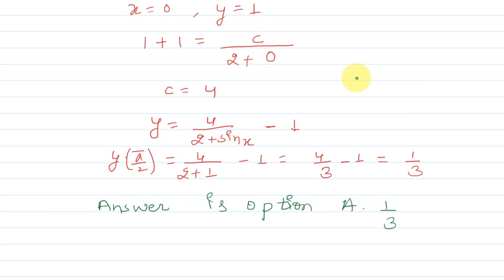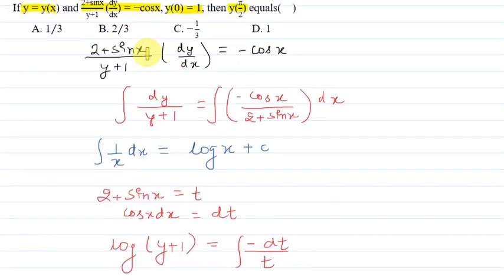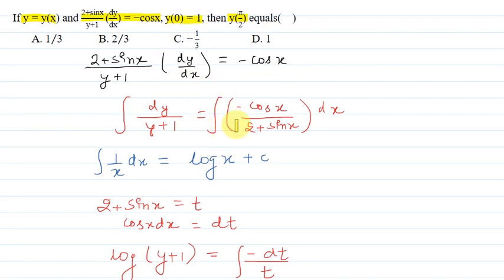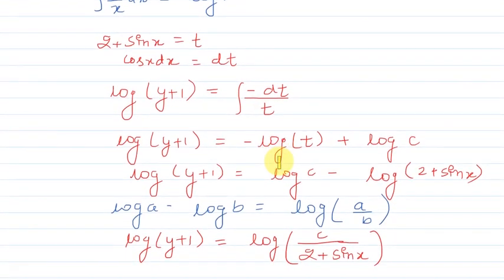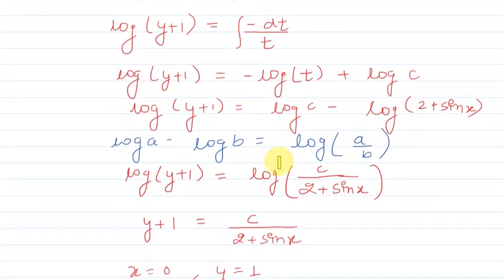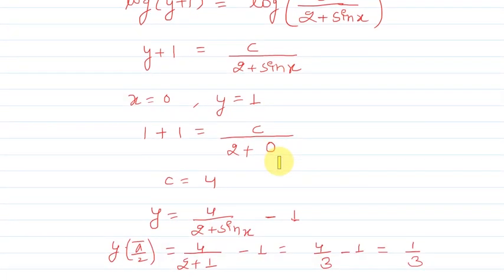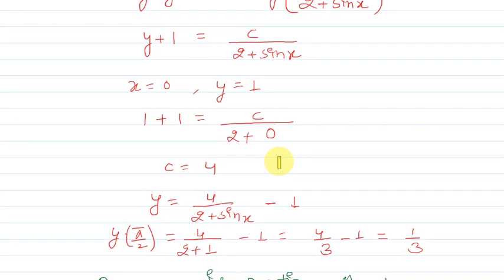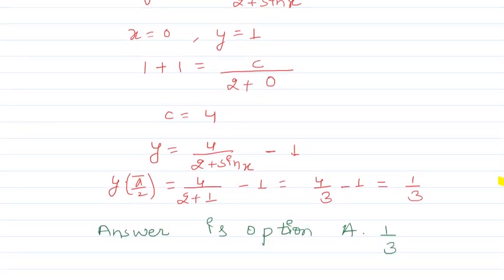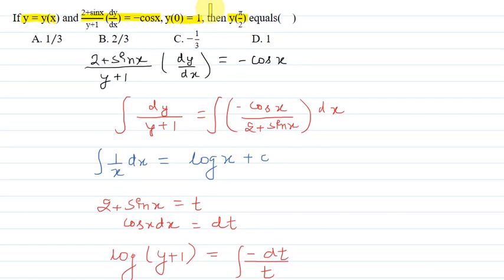Let us summarize quickly. We were given (2 + sin x)/(y + 1) · dy/dx = -cos x. We separated y and x terms and integrated using standard integration. For the right-hand side, we substituted t = 2 + sin x to convert to standard form. We obtained y + 1 = C/(2 + sin x), applied condition y(0) = 1 to get C = 4, then evaluated y(π/2) = 4/3 - 1 = 1/3, which is option A. I hope you understood the solution, thank you.